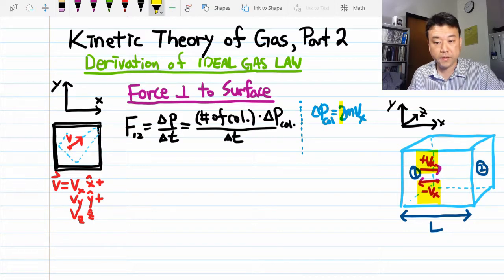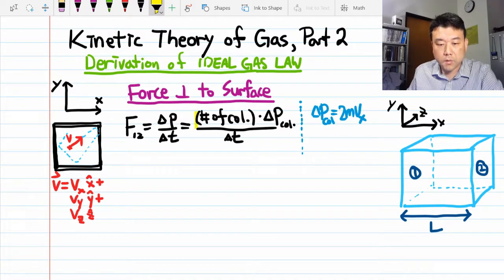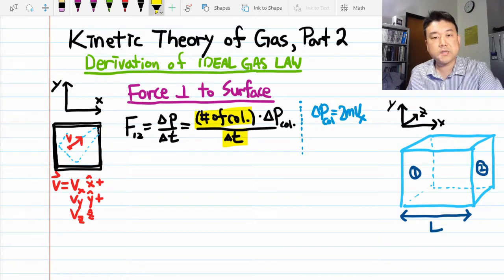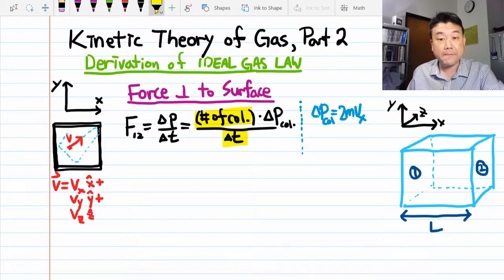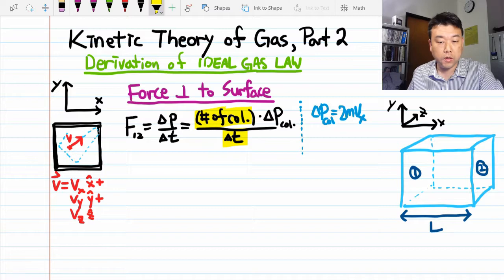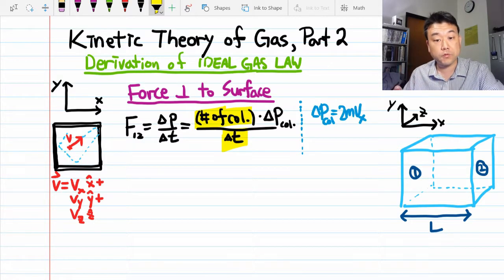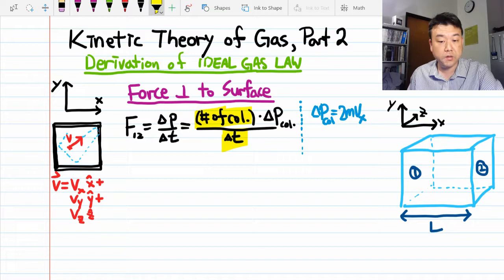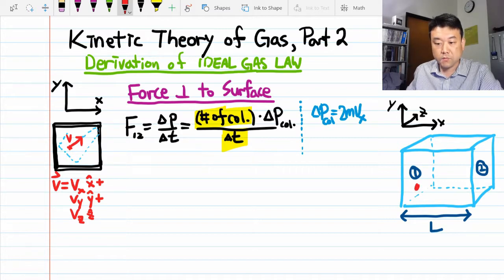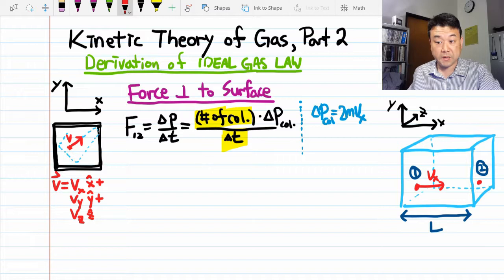Now for the number of collisions per time, I think it's easier to figure out the amount of time between collisions. Then it will be one collision per some amount of time we figure out. When you take the reciprocal of the amount of time between collisions, that gives you this fraction of number of collisions per time. So when you imagine a gas particle starting from left side, moving to the right with speed Vx, the amount of time it takes to the next collision when it reaches wall number two is distance L divided by speed Vx.